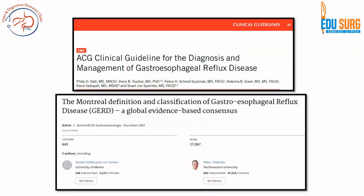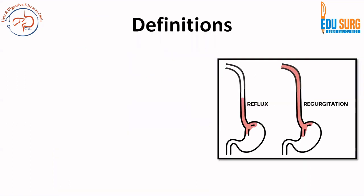Both articles are available for free as they are open access. You can look at the ACG clinical guideline which came in 2022 and the Montreal definition and classification which came in 2007. Understand these terms very clearly because they are routinely asked in exams and are very important to know in your clinics as well.